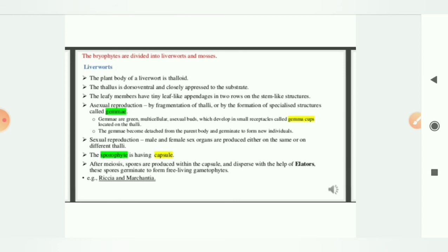These gemmae have the ability to produce the whole organism. Now what are these gemmae? Gemmae are green multicellular asexual buds which develop in small receptacle called gemma cups located on the thalli. As soon as I am using the word asexual, means they have the ability to grow into a whole organism by their own way.